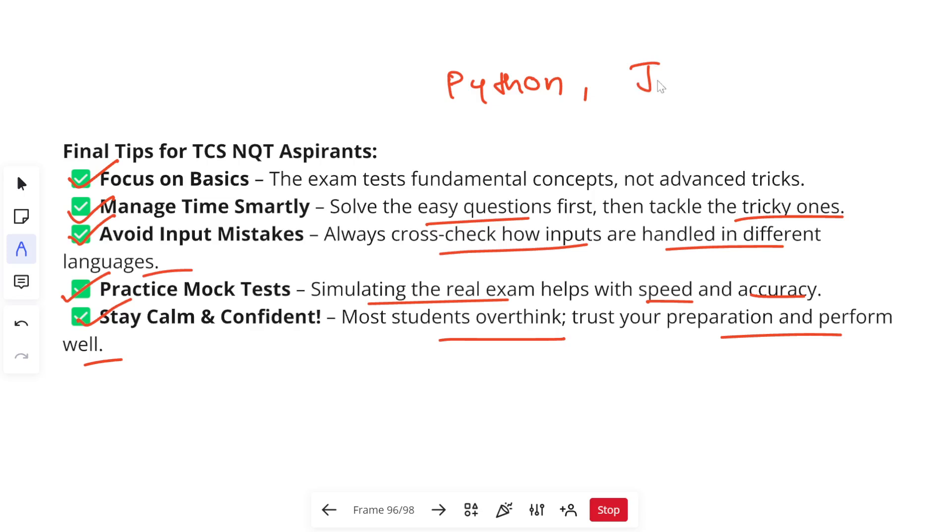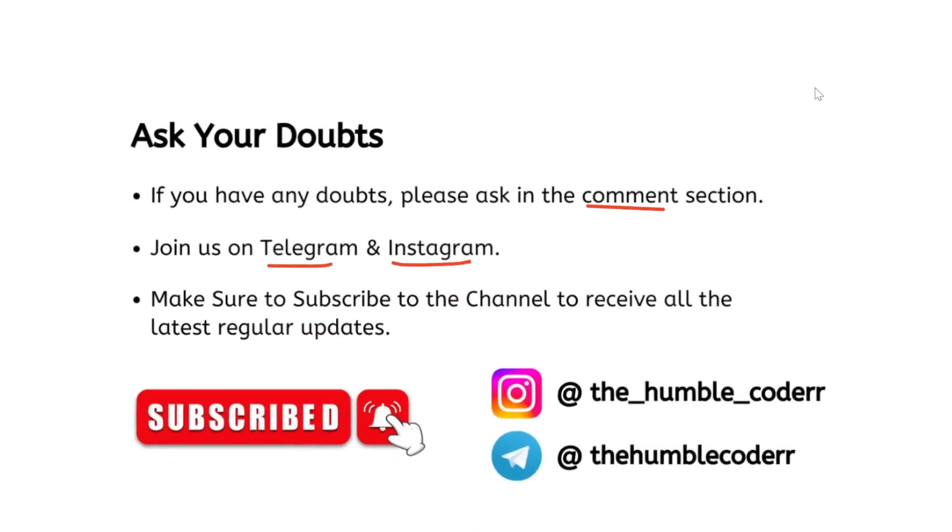One more thing about the coding part: we have seen that most of the issues were faced in Java. Compiler issues were faced in Java, and the least amount of issues were faced in Python. C++ and C were like equal and moderate level. Some students faced issues, some did not. Try to choose your language wisely and prepare accordingly.